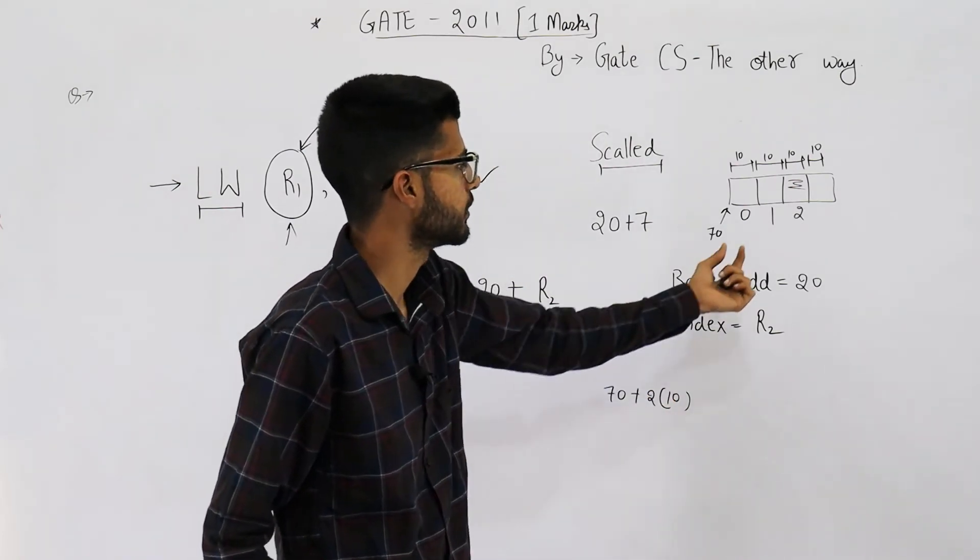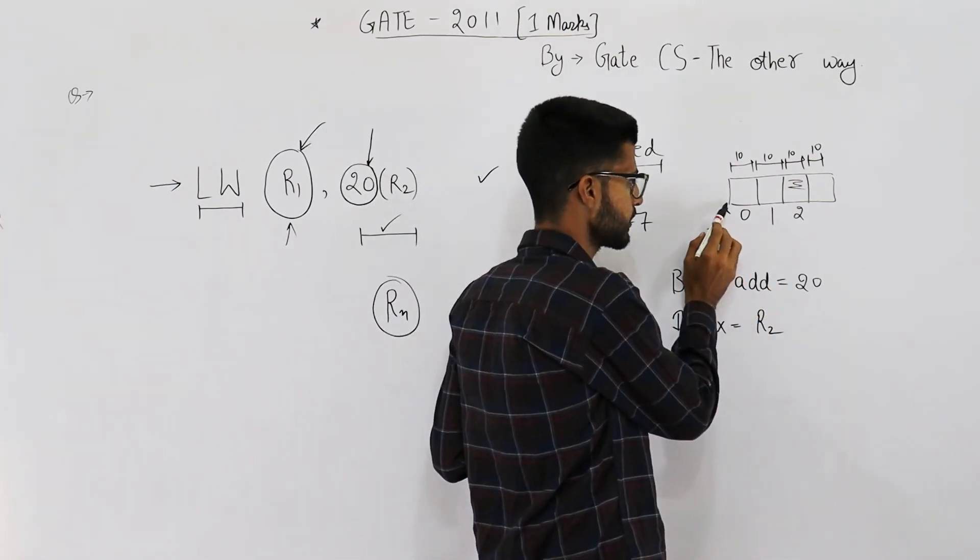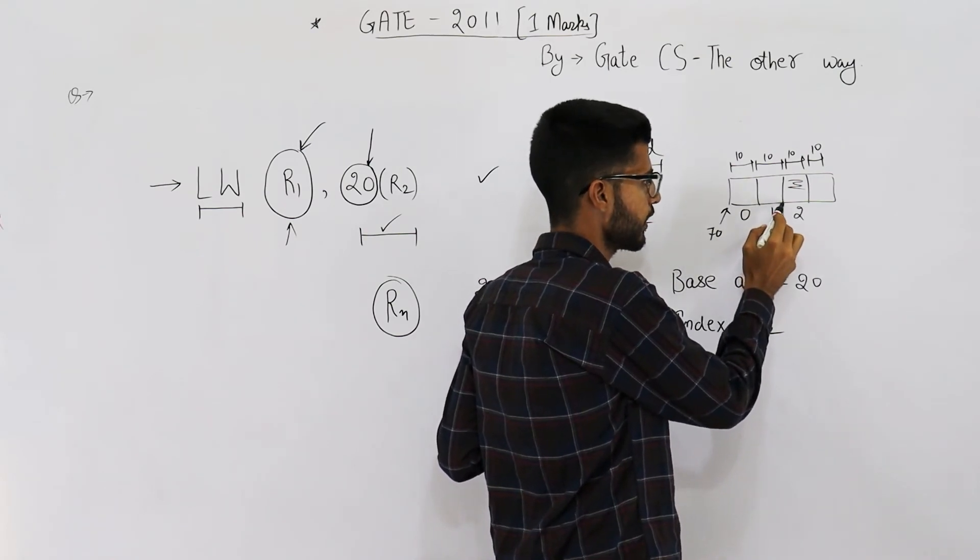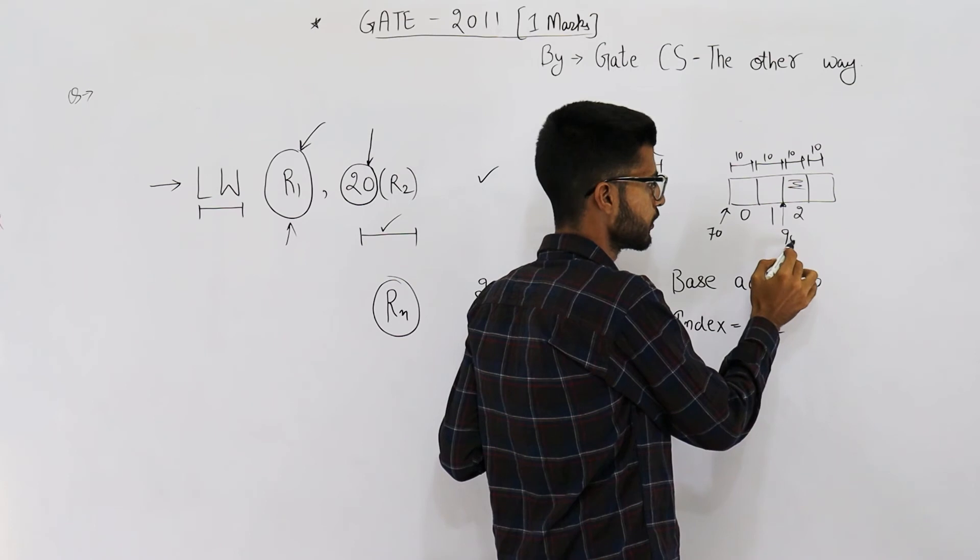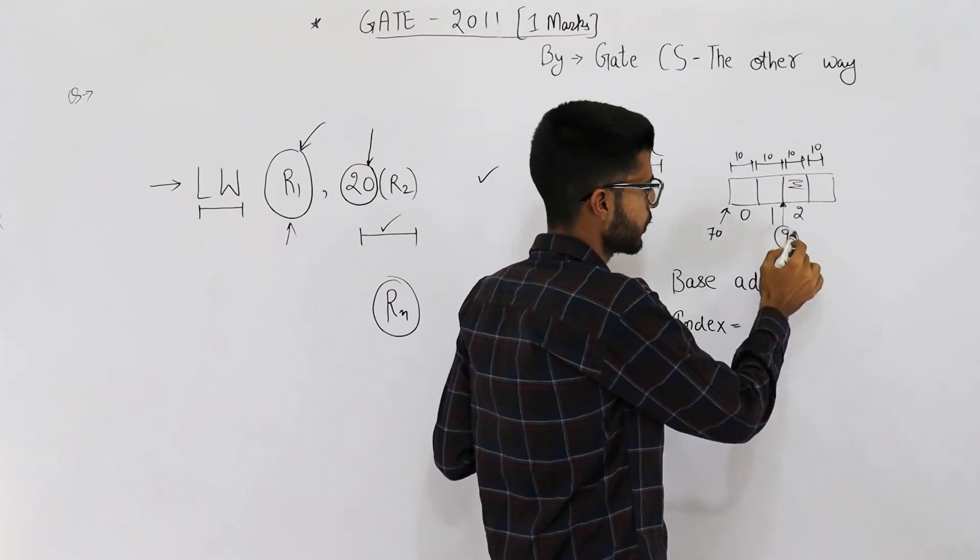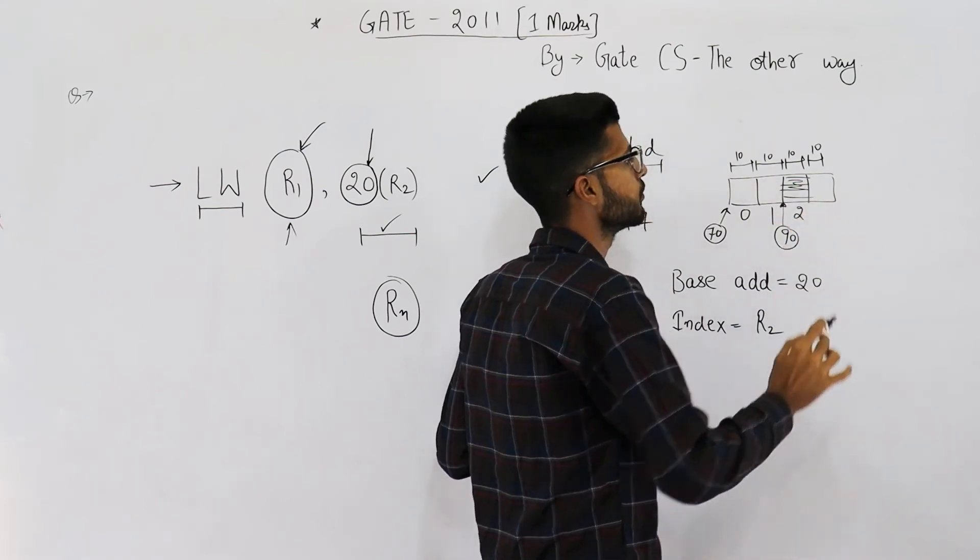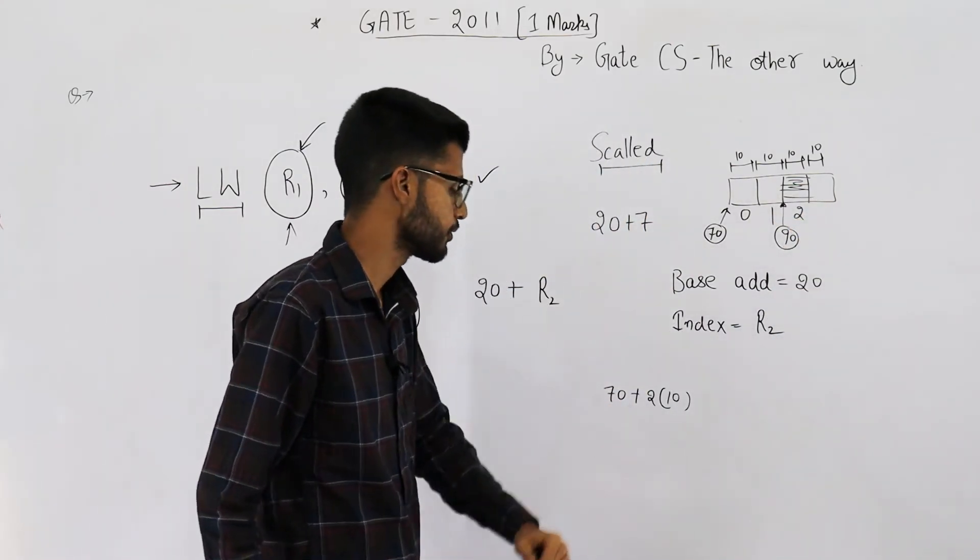Then the effective address will be 70 plus 2 into 10. Then you will get the base address of this. This address is 70, this address is 80, and this address is 90. So base address of our required element or column is 90. And this is how you get 90.